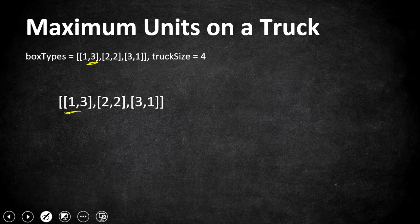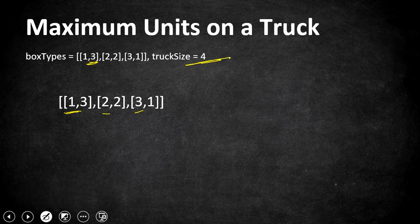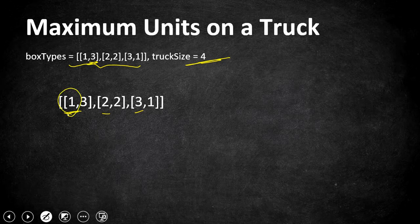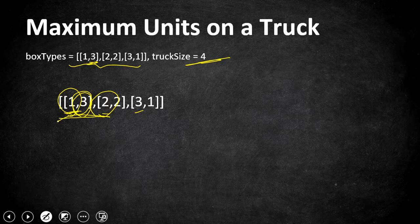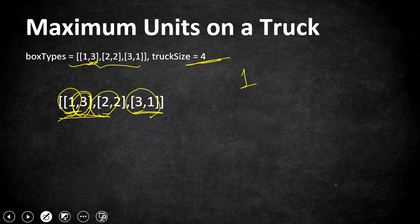Once sorted, we pick boxes from the front of the array first and move to later ones. With our truck size of four, we first take one box of type 1 for three units, then take both boxes of type 2. After filling three boxes, we have one space left but three boxes remaining in type 3, so we pick just one box and add its unit to our total.